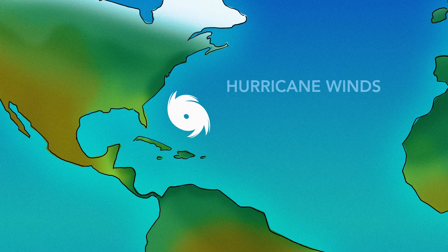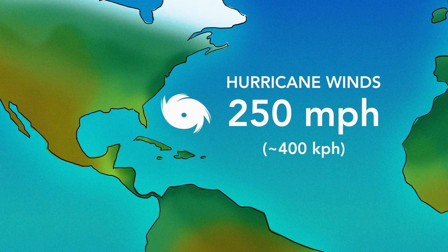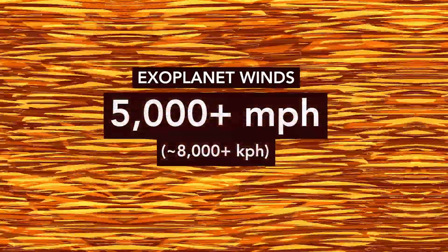Here on Earth, the fastest winds are recorded in hurricanes at about 250 miles per hour. Exoplanet winds have been measured to over 5,000 miles per hour.